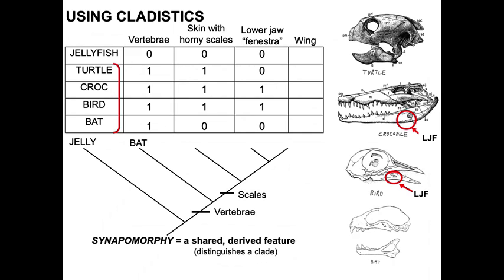Then we look at the next feature, skin with horny scales. We see ones for turtles, crocs, and birds, which tells us they are all more closely related to each other based on this character state. Bats do not have that. We don't have to worry about where to put jellyfish because we already placed them. So if you put scales here, we can pull the bats out — bats have vertebrae but they do not have scales. Now we're left with the other three taxa to put on our tree: crocs, turtles, and birds.